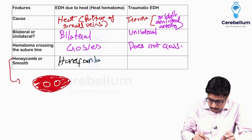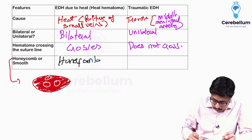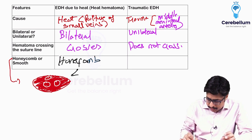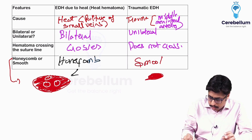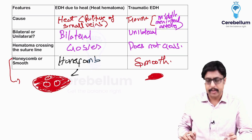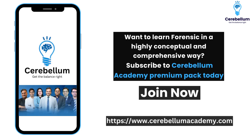So in EDH due to heat, the appearance will be like a honeycomb pattern, whereas in traumatic EDH, it will be simply a smooth clot.